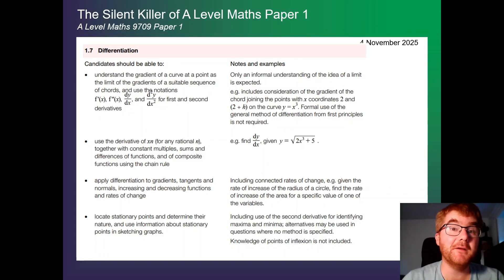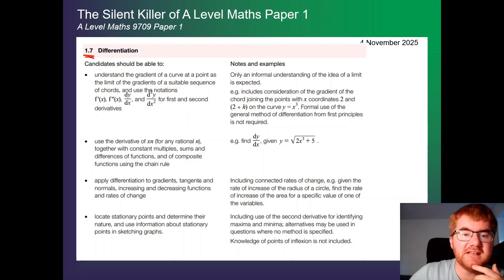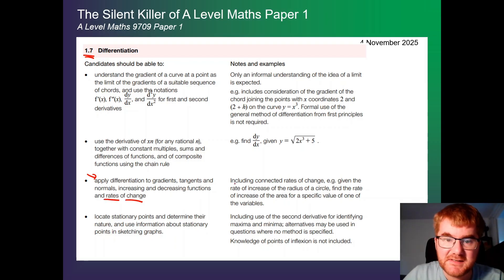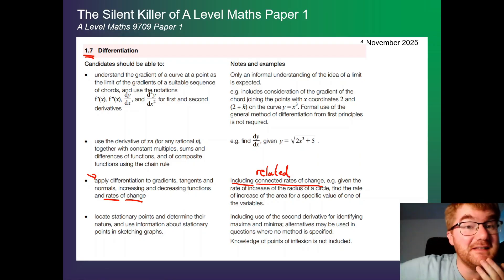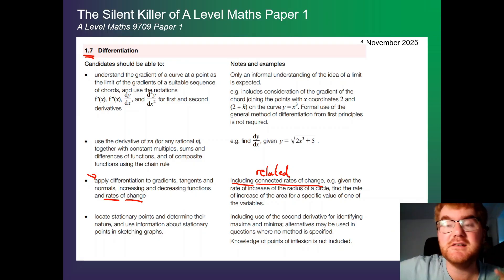Now the first question I often get with this topic is, where actually is it in the syllabus? And it often gets forgotten about. So I've got the syllabus out for you. This is now the 2026 updated version, although this particular topic hasn't changed. And you'll notice it's hidden down here in this section. So apply differentiation, the gradients, tangents, normals, increasing, decreasing functions, and rates of change. And it includes, I say this specifically, including connected rates of change, which I often call related rates of change as well. And so it's literally hidden within the syllabus, but we need to make sure that we can do this kind of question.